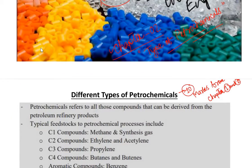Types of petrochemicals. Chapter 1 is the introduction chapter for petrochemicals and industry-related topics. Chapter 2 — you can prepare approximately 10 marks. So if you have a syllabus with marks distribution, you can prepare accordingly.